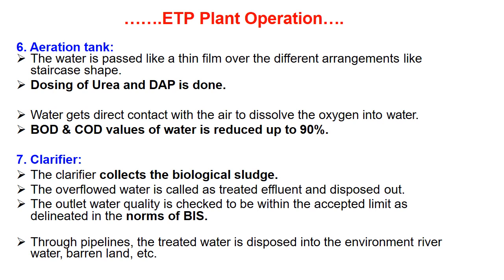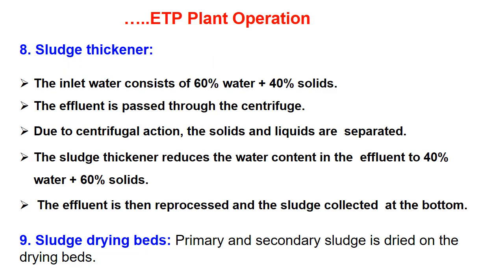Number seven is the clarifier. The clarifier collects the biological sludge. The overflowed water is called treated effluent and is disposed out. The outlet water quality is checked to be within acceptable limits as prescribed by BIS. Through pipelines, the treated water is disposed into the environment such as river water, barren land, or lakes.